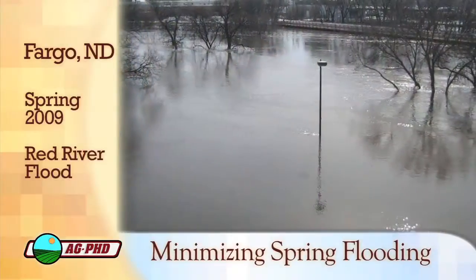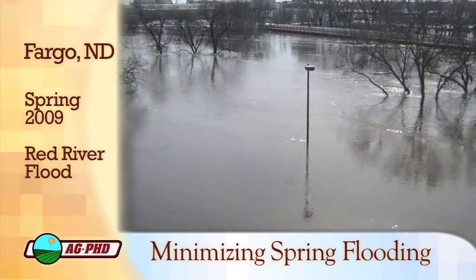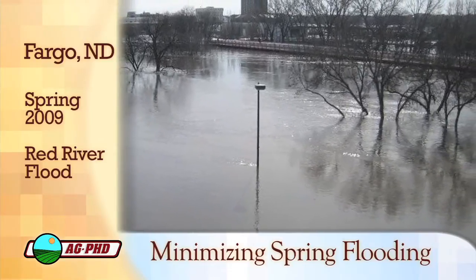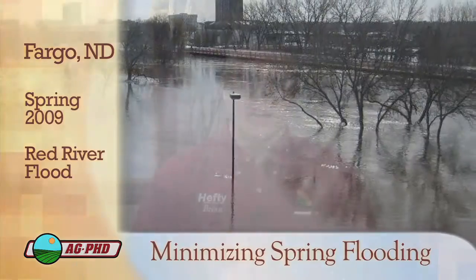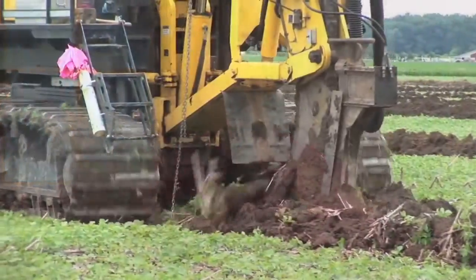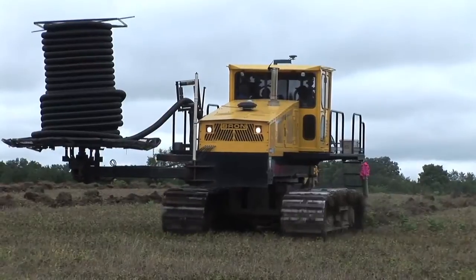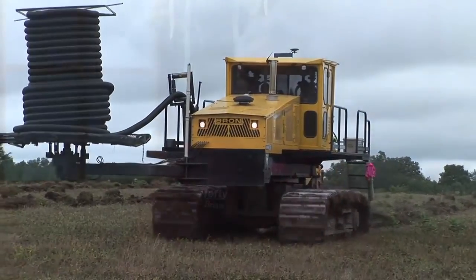The reason why we're talking about minimizing spring flooding is, let's look back just one year ago and what happened up in the Red River Valley. In the Fargo, North Dakota area, they had some of the worst flooding that they've ever had. If farmers in that whole area had drain tile and had proper drainage systems, the flooding could have been minimized — we still would have most likely had some flooding.